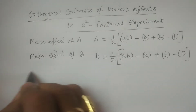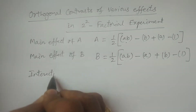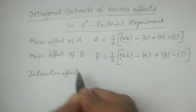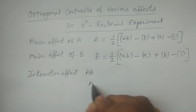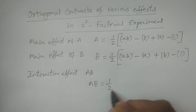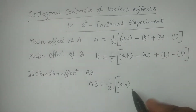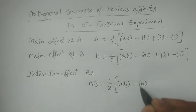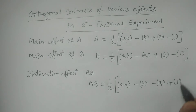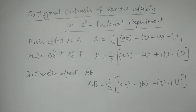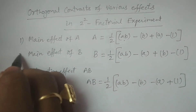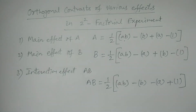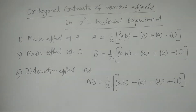Now the interaction effect AB is written as: AB = (1/2)[AB - B - A + 1]. These are the three effects in the two-squared factorial experimental design: main effect of A, main effect of B, and interaction effect AB between the two factors.